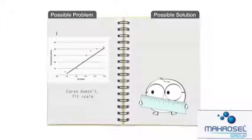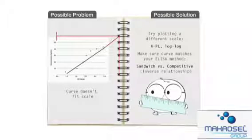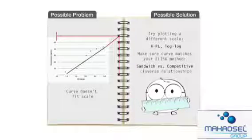In some cases, the curve you are using may not fit to scale. Therefore, you may want to try plotting a different scale that matches your method such as a four-parameter logistic curve.